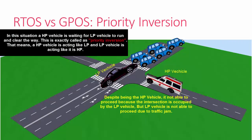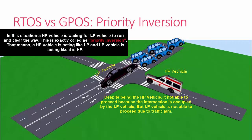The higher priority vehicle is behaving like it is a lower priority, and a lower priority vehicle is behaving like a higher priority. This is the case of priority inversion.